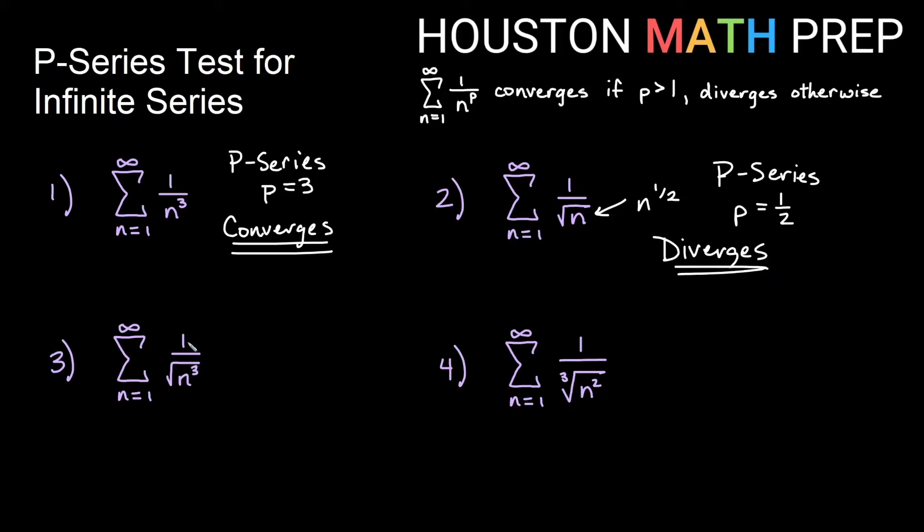This one here, we have 1 over the square root of n cubed. This is like n to the three halves. The square root gives us the half part, and the cube gives us the three. This is a p-series where p is 3 halves. Since 3 halves is greater than 1, we know this series converges using the p-series test.